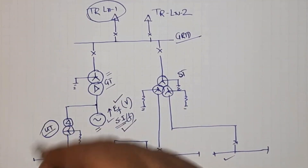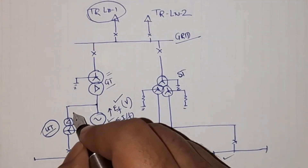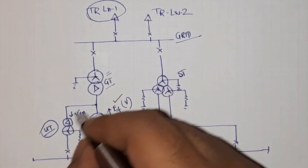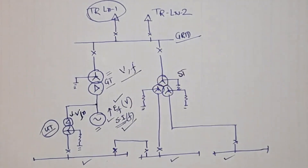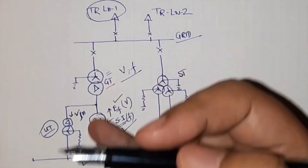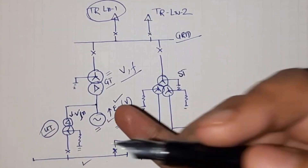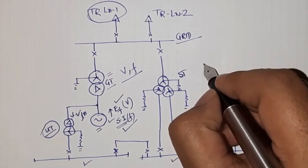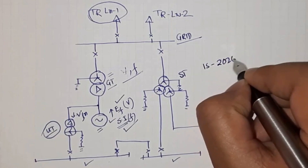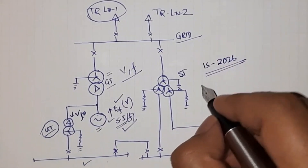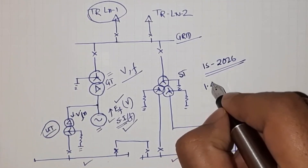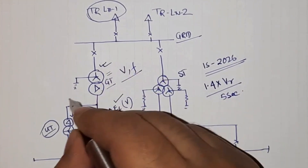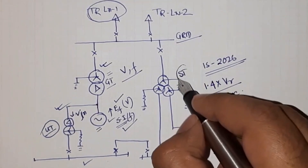The same thing will happen for the unit transformer because it is also connected with the generator — its input voltage will increase. So these two transformers connected directly to the generator will face higher values of voltage and frequency. For that reason, transformers connected directly to the generator have a special characteristic: over-voltage withstand capability. As per Indian Standard IS 2026, these transformers must be capable of withstanding 1.4 times the rated voltage for 5 seconds. This requirement does not apply to the station transformer.